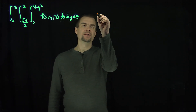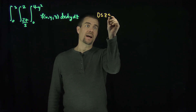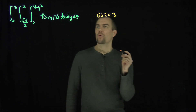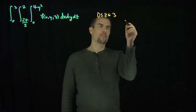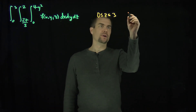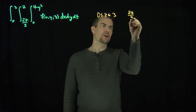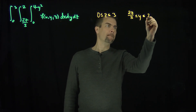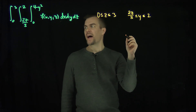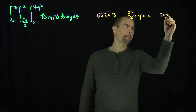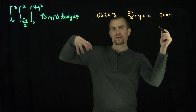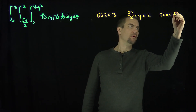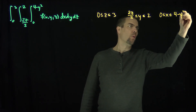In this region, z goes between 0 and 3 — that's what the z limits tell us. When z goes from 0 to 3, y goes from the line 2z/3 up to 2. And x goes from 0 up to the cylindrical paraboloid 4 minus y squared.